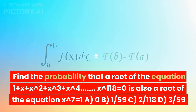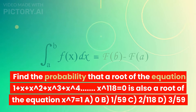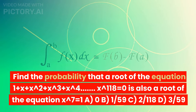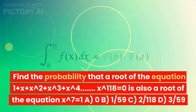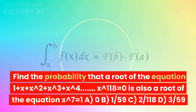Find the probability that a root of the equation 1 + X + X² + X³ + X⁴ + ... + X^118 = 0 is also a root of the equation X⁷ = 1. Options: A. 0, B. 1/59, C. 2/118, D. 3/59.